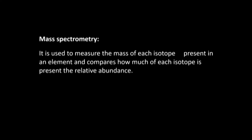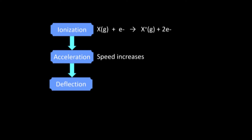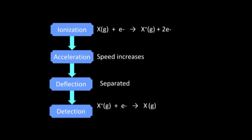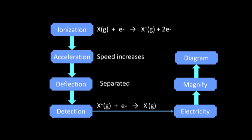Mass spectrometry is a technology used to detect the accurate atomic mass of an element. It measures the mass of each isotope present and compares their relative abundances. The process involves five stages: ionization (positive ions are produced), acceleration (speed increases), deflection (ions are separated by mass — heavier, lighter, medium), detection (a current is produced), and finally the signal is magnified.